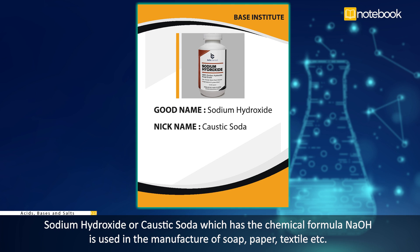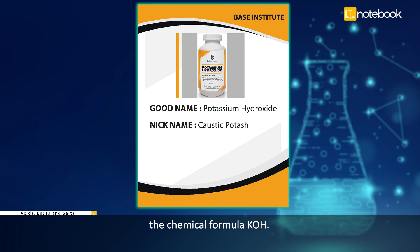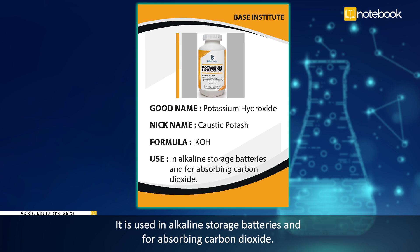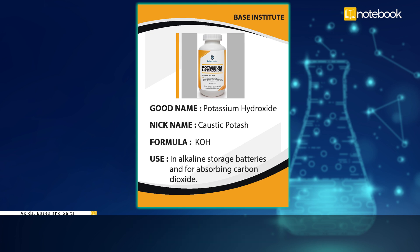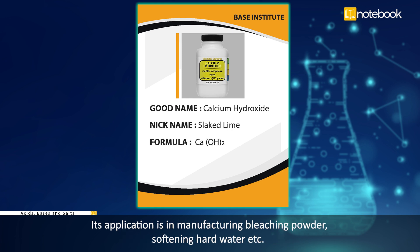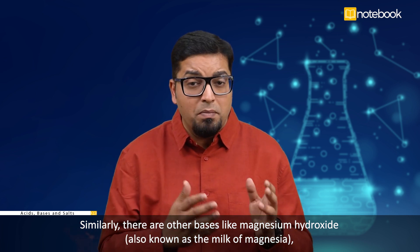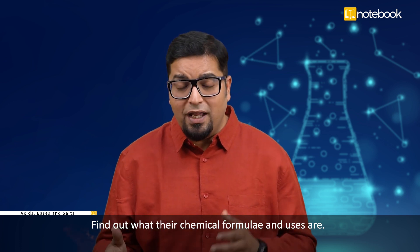Sodium hydroxide, or caustic soda, has the chemical formula NaOH and is used in the manufacture of soap, paper, and textiles. Potassium hydroxide, also known as caustic potash, has the formula KOH and is used in alkaline storage batteries and for absorbing carbon dioxide. Calcium hydroxide, or slaked lime, has the formula Ca(OH)₂ and is used in manufacturing bleaching powder and softening hard water. There are also other bases like magnesium hydroxide (milk of magnesia), aluminium hydroxide, and ammonium hydroxide.